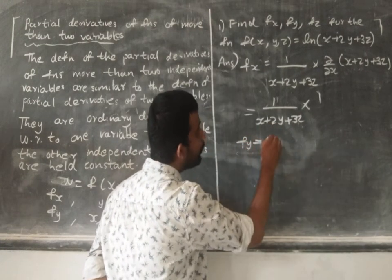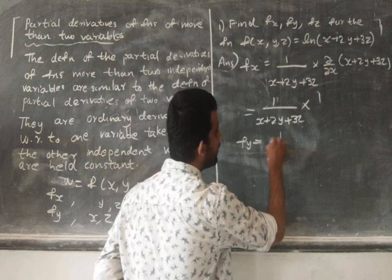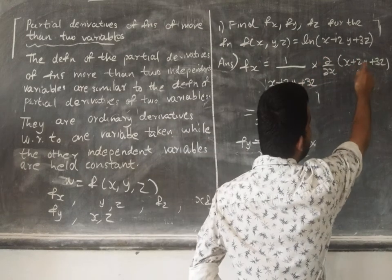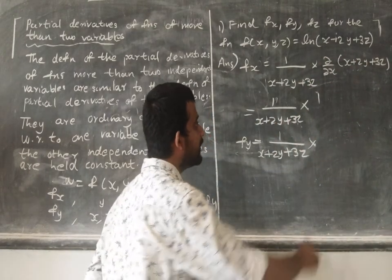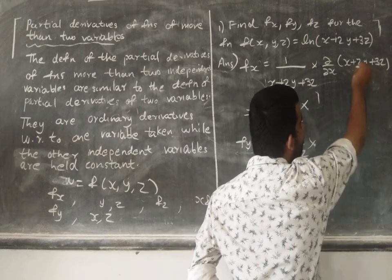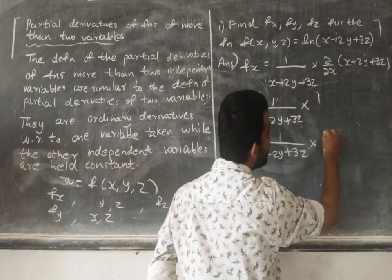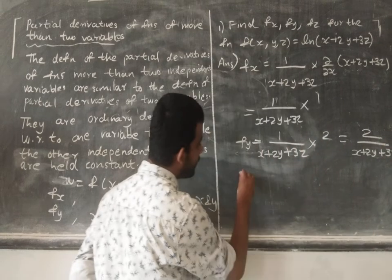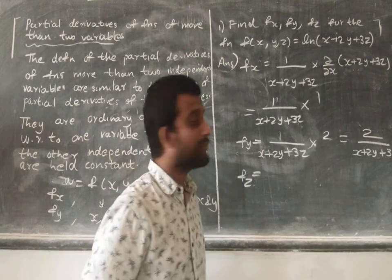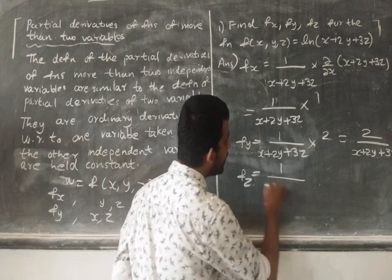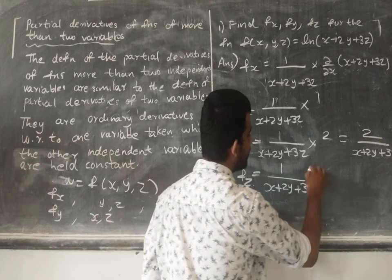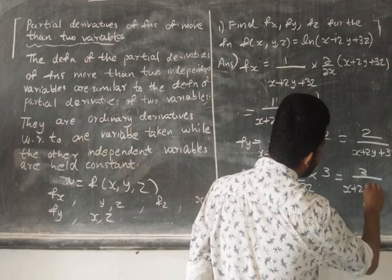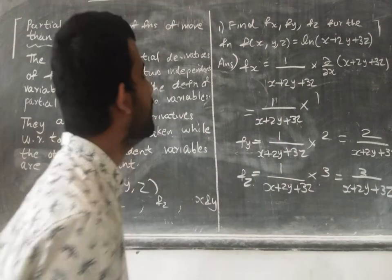So f_x = 1/(x + 2y + 3z). For f_y, holding x and z constant: 1/(x + 2y + 3z) times the partial derivative of (x + 2y + 3z) with respect to y. Since x and z are constant their derivatives are 0, so the derivative of 2y is 2. Thus f_y = 2/(x + 2y + 3z). Similarly f_z = 3/(x + 2y + 3z).